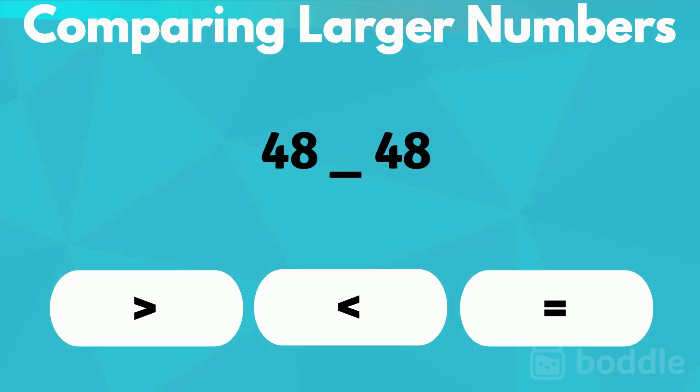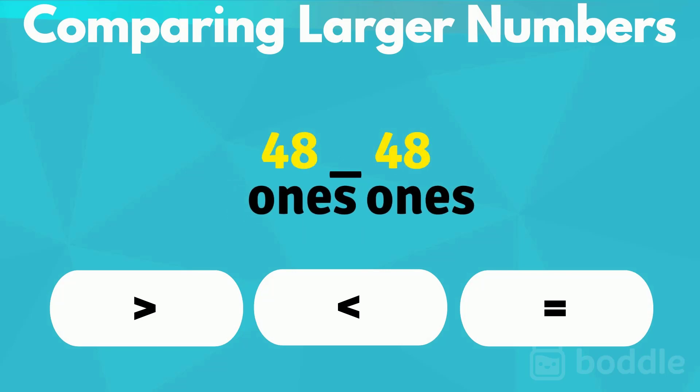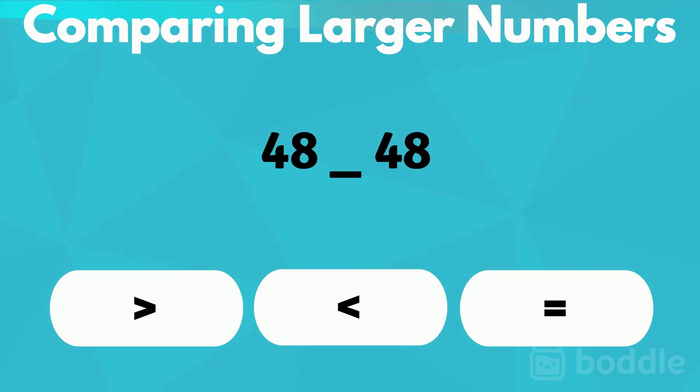What about forty-eight and forty-eight? Both numbers have four tens and eight ones. These numbers are the same, so they're equal.